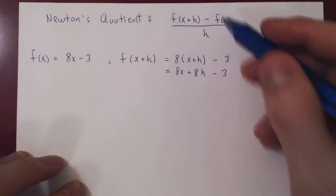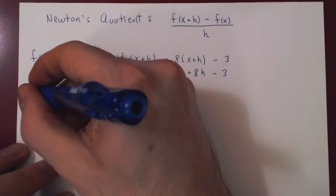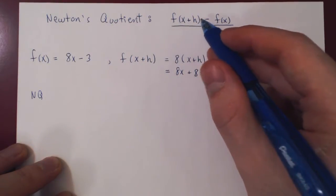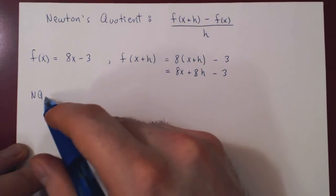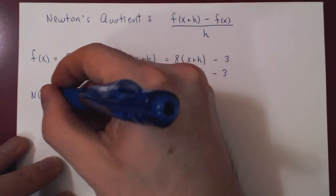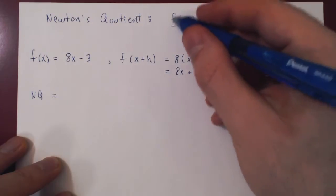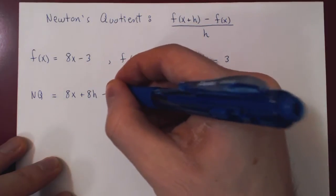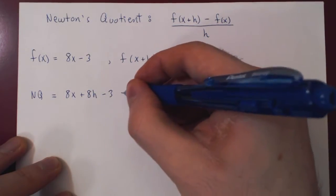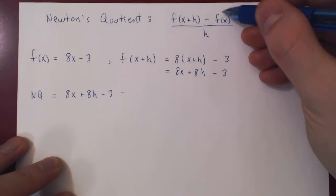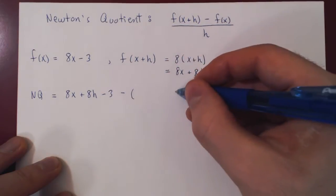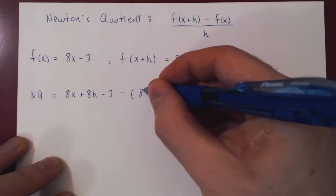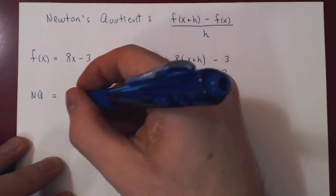Now we can compute Newton's quotient — I'll write NQ for short instead of rewriting f of x plus h minus f of x over h. f of x plus h is 8x plus 8h minus 3. Minus — and here be careful — all of f of x is negated, so open your parentheses: minus 8x minus 3. All of this is over h.